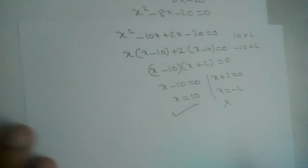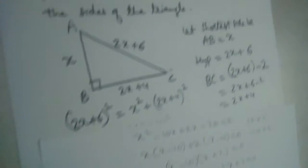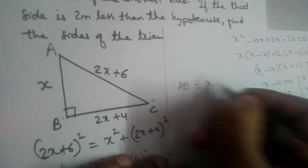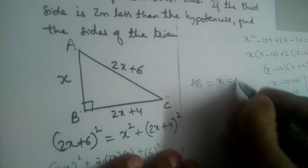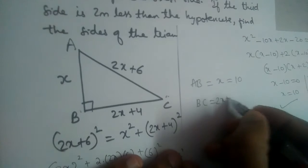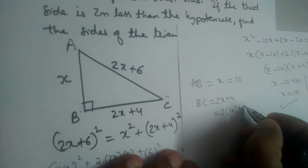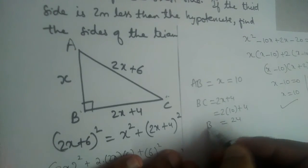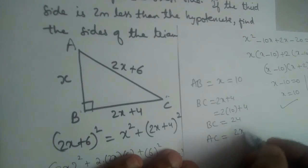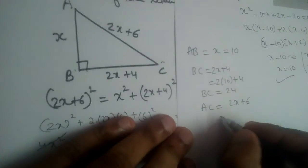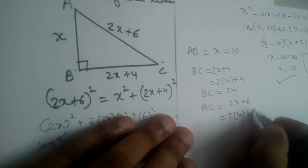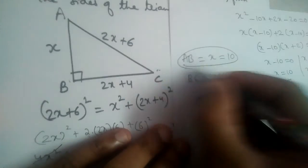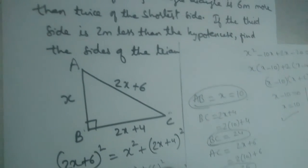Since X represents side AB, X cannot be negative, so X equals 10. Therefore AB equals 10. BC was 2X plus 4, so BC equals 2 times 10 plus 4 equals 24. AC (the hypotenuse) was 2X plus 6, so AC equals 2 times 10 plus 6 equals 26. The three sides of the triangle are 10, 24, and 26 meters.